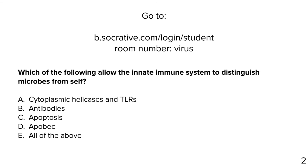Quiz: which of the following allow the innate immune system to distinguish microbes from self? Cytoplasmic helicases and TLRs, antibodies, apoptosis, APOBEC, or all of the above? The answer is A — cytoplasmic helicases and TLRs. The innate immune system comprises those sensors plus sentinel cells and cytokines. Antibodies are adaptive, and APOBEC is intrinsic.